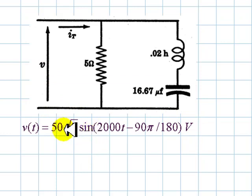it has an RMS value of 50 volts, an angular frequency omega of 2000 radians per second, and a phase shift of negative 90 degrees. The question is, what is the total current IT entering the circuit?